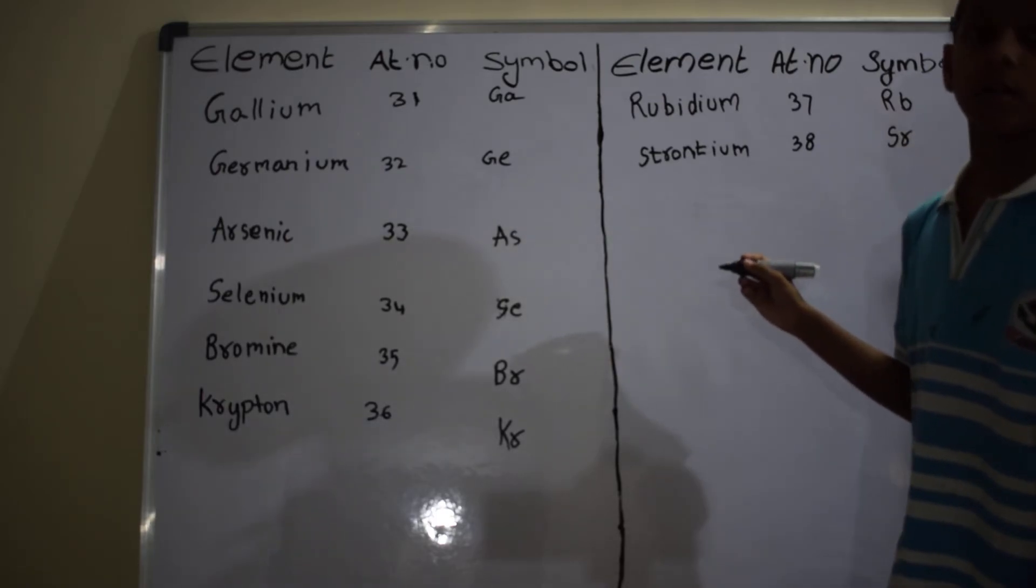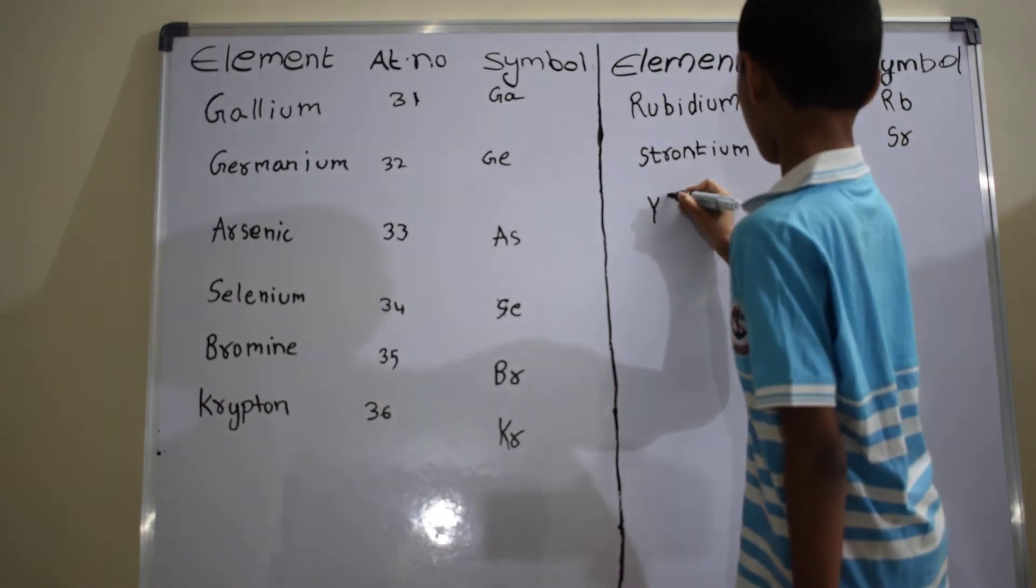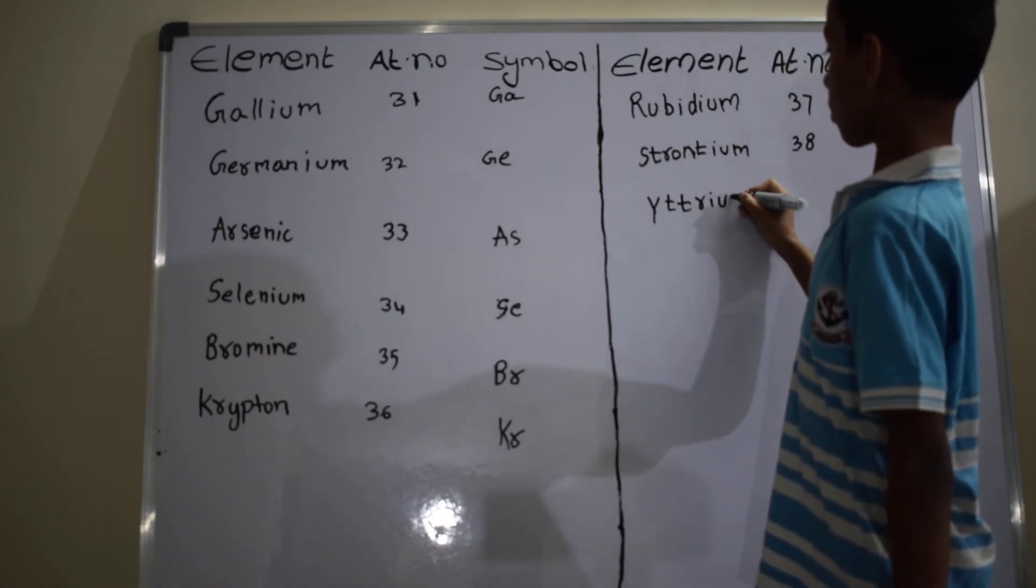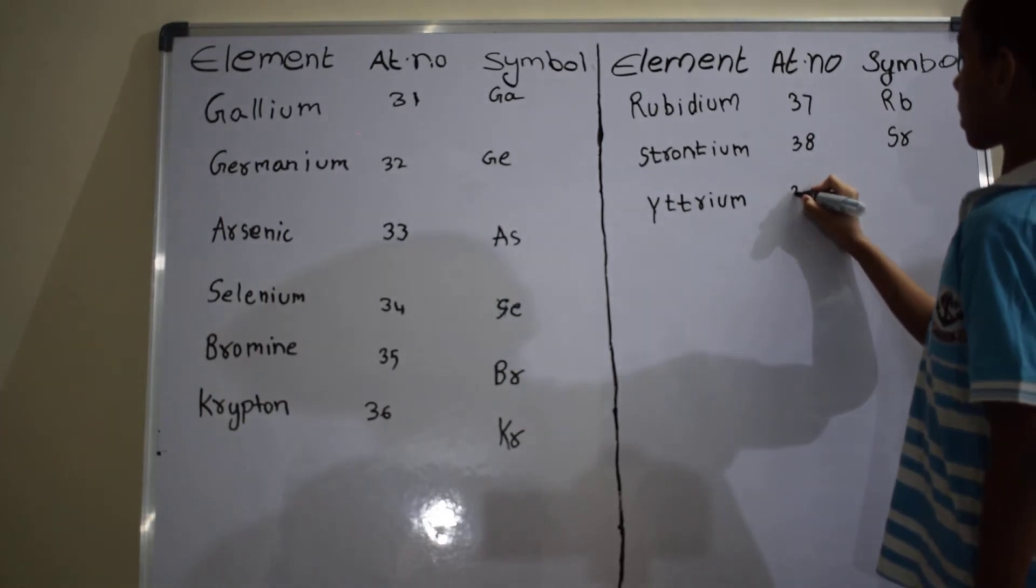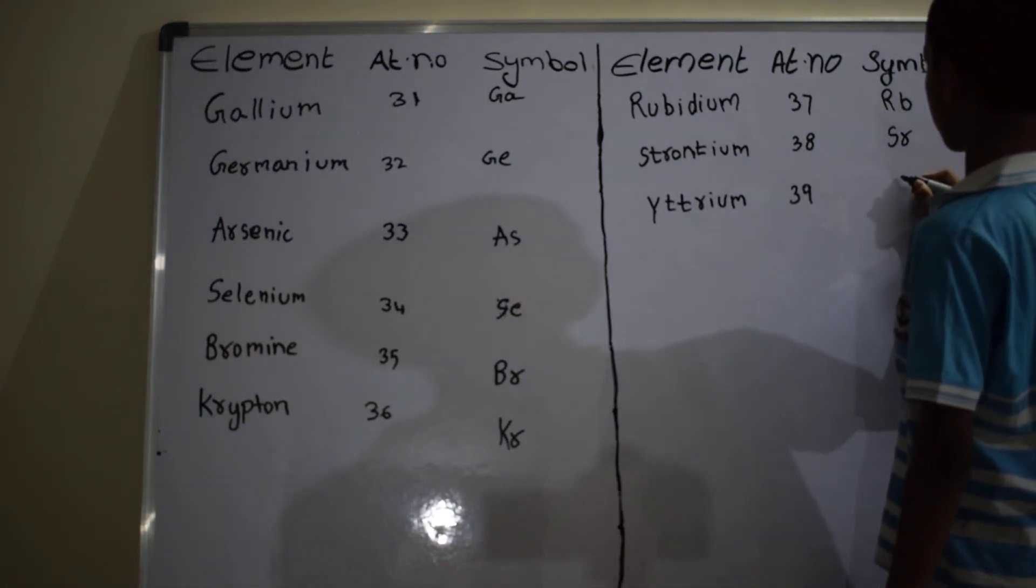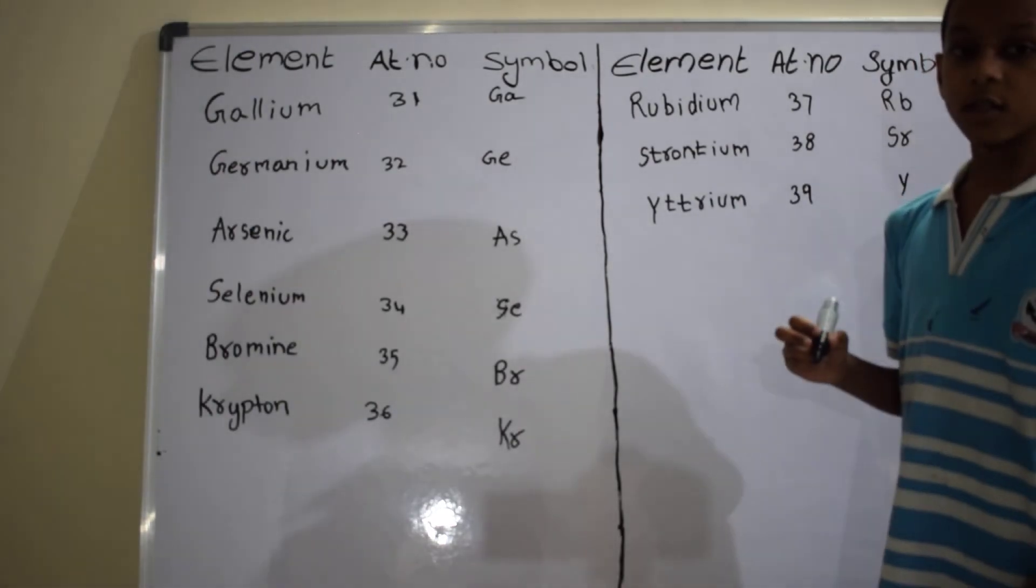Next element is yttrium, Y-T-T-R-I-U-M. Atomic number is 39. Symbol is Y.